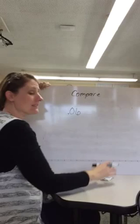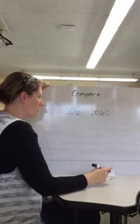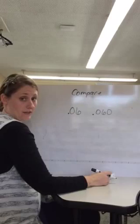This one is going to be 6 hundredths, and I want you to compare that to 60 thousandths. Which one is bigger? 6 hundredths or 60 thousandths? Or are they exactly the same? I'm trying to figure that one out.